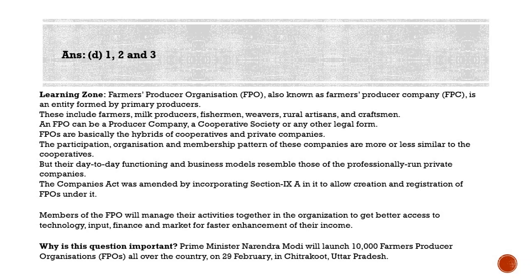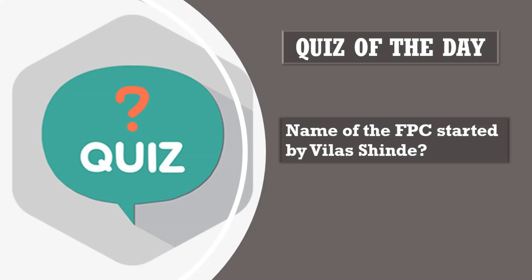Now for our quiz question: there is a Farmer Producer Company (FPC) established by agricultural engineer Vilas Shinde in 2011, which has grown to become the largest FPC in India. It has a membership of 8,000 farmers and a turnover of 300 crores. It has overtaken Mahindra Agri Business to become India's largest grape exporting company, and Kishore Biyani's Future Group signed an MoU with it for direct sourcing of fruits and vegetables for Big Bazaar. Identify this company — please post your answers in the comment section.